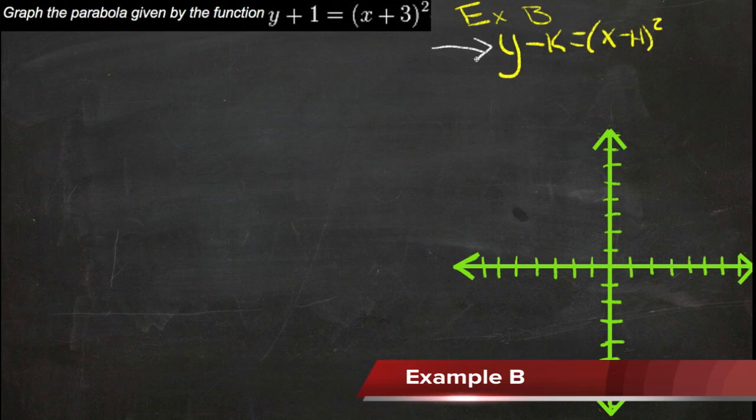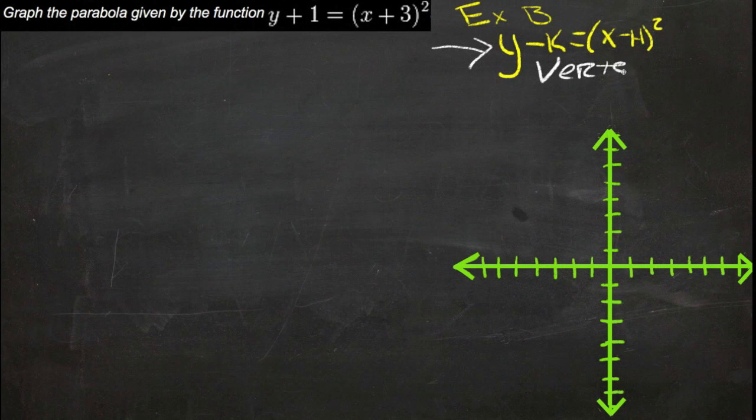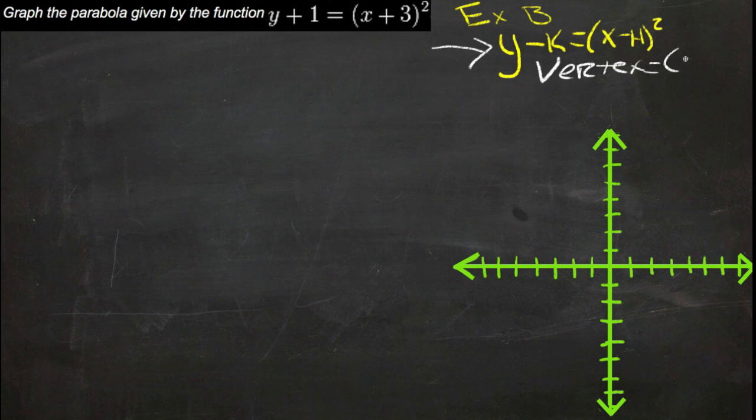The standard vertex format here, y minus k equals x minus h squared, tells us just by glancing what the vertex is. The vertex of a quadratic function in this format is h, k.